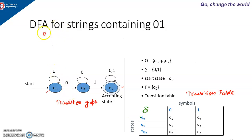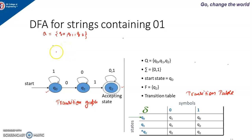Capital Q is nothing but the set of all states for that particular finite automata. Here there are three states, so capital Q will be {Q0, Q1, Q2} and it should always be non-empty — we should have at least one state. Sigma is the symbol used to represent the input alphabet; here it is 0 and 1. There will be a transition from one state to another state based on the input alphabet given to it.